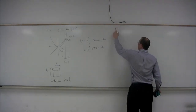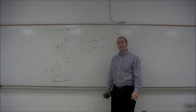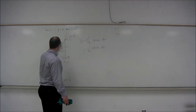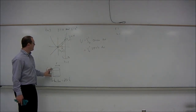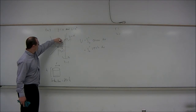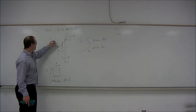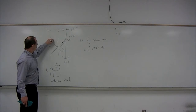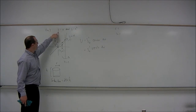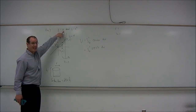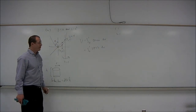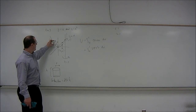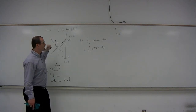Our volume will come from integrating the lateral surface area of the cylinder: the integral from 0 to 1 of 2 pi r h. We begin with h — the height of the vertical line segment, which is the difference in the two y coordinates. The top y coordinate is x and the bottom y coordinate is x squared, since on the line y equals x and on the parabola y equals x squared. So the height is x minus x squared.